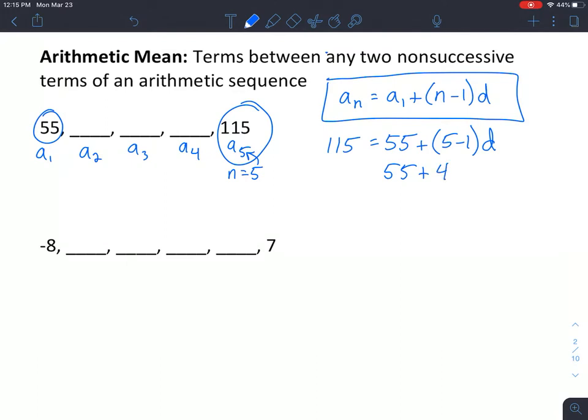55 plus 5 minus 1 is 4, just simplifying this. And then we're going to subtract 55 from both sides. So we end up with 60 equals 4d. Divide both sides by 4. Then we end up with 15 equals d.